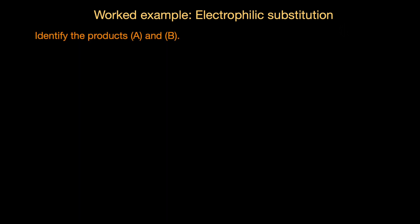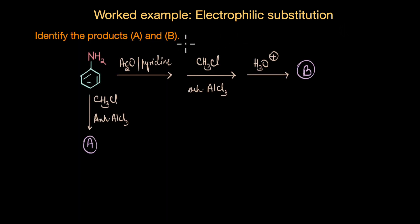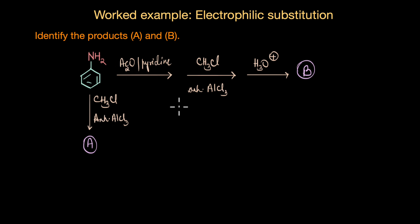Let's look at one more question: we need to identify products A and B. Again starting with aniline — in the first case we are performing a Friedel-Crafts alkylation reaction directly; in the second case we perform the same reaction but on acetylated aniline. What products do we get? In the first case of direct Friedel-Crafts alkylation — we get nothing.